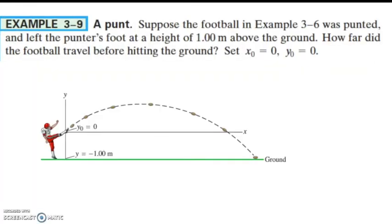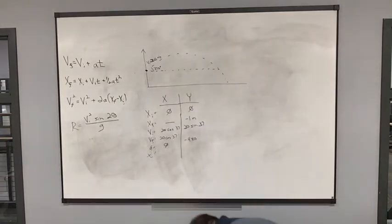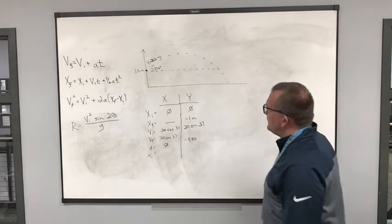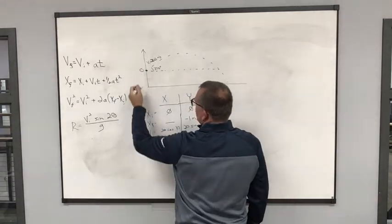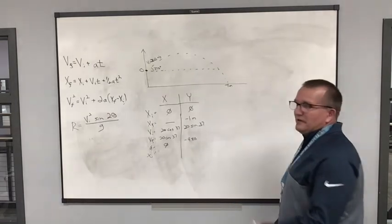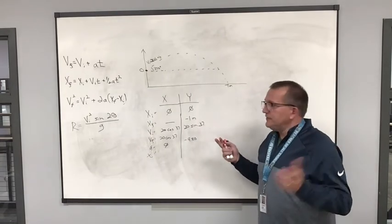Example 3.9: A punt. Suppose the football from example 3.6 was punted and left the punter's foot at a height of 1 meter above the ground. How far did the football travel before hitting the ground? We set the kick point as origin zero. The finishing point in y is just negative 1 meter. We're keeping our origin consistent, which makes things easier.